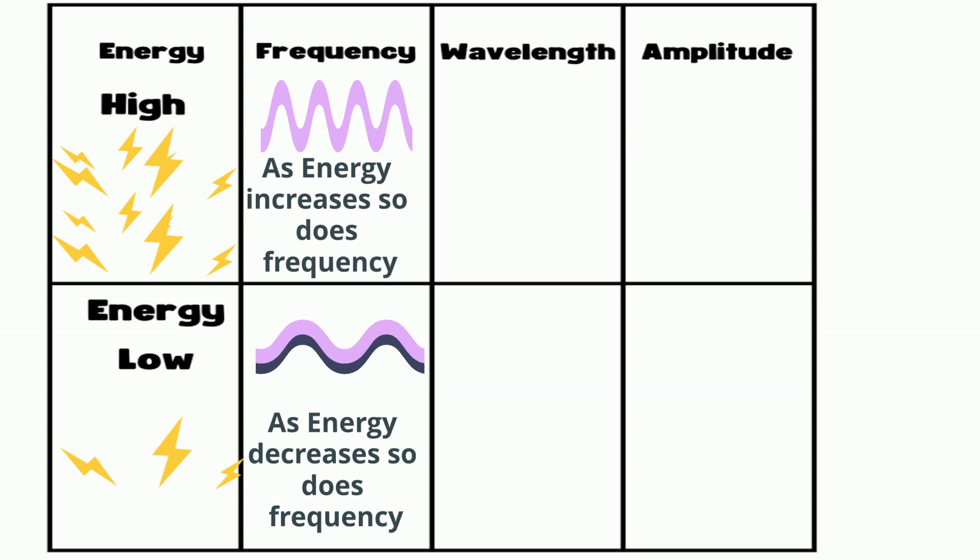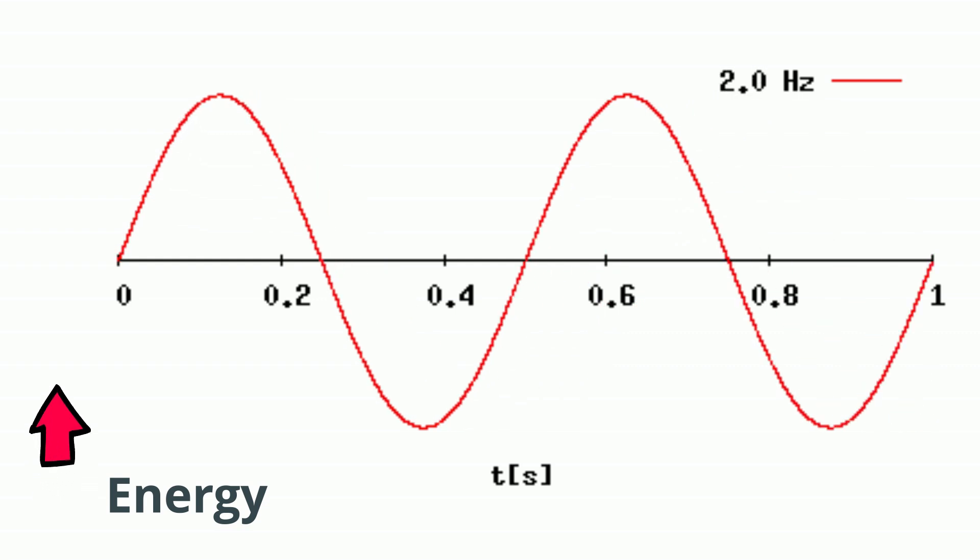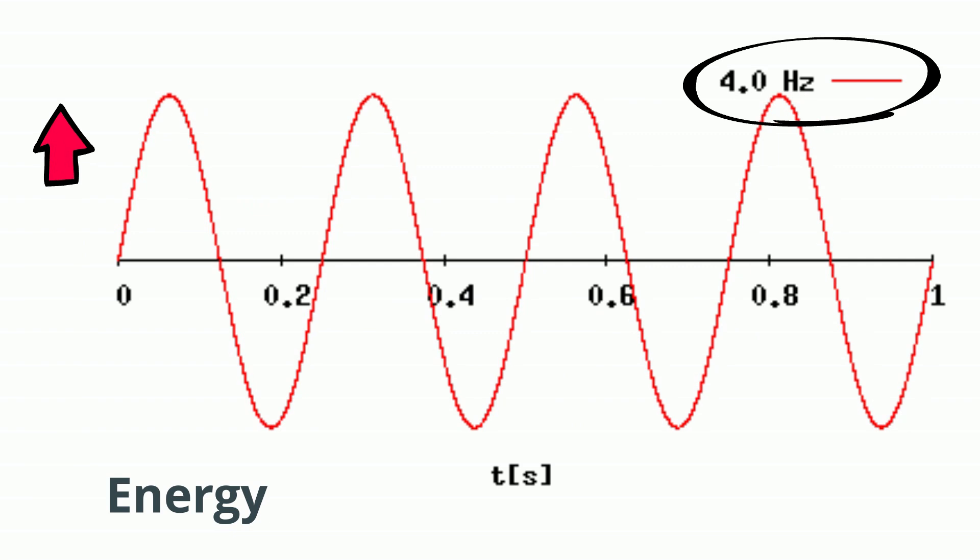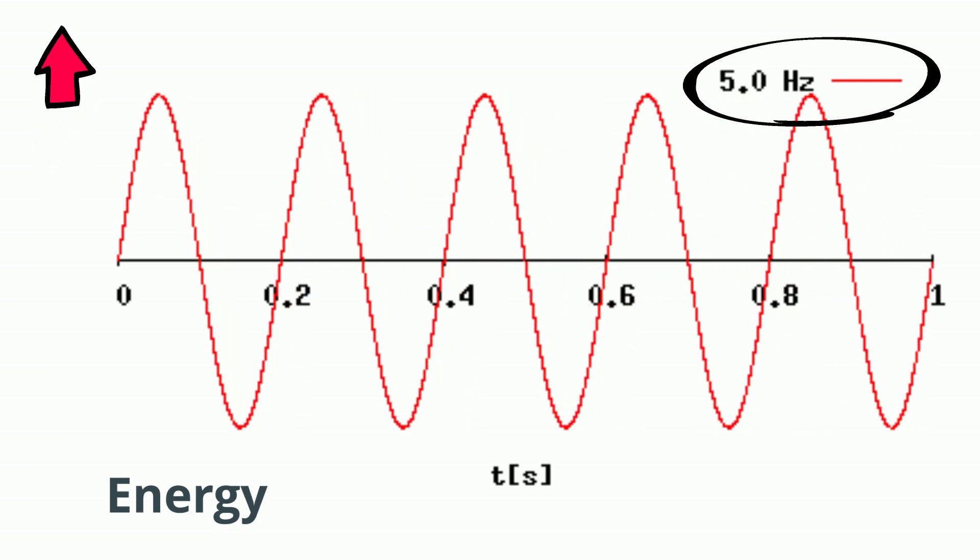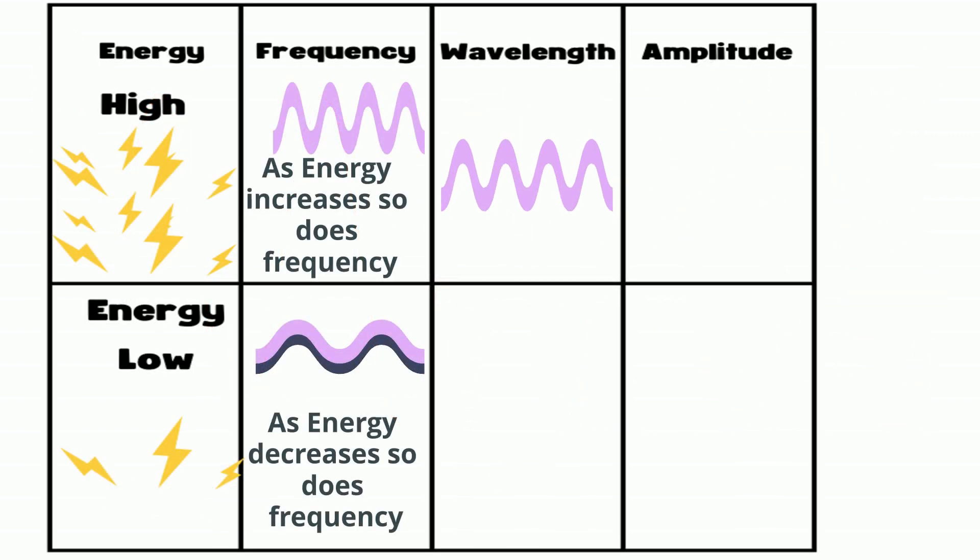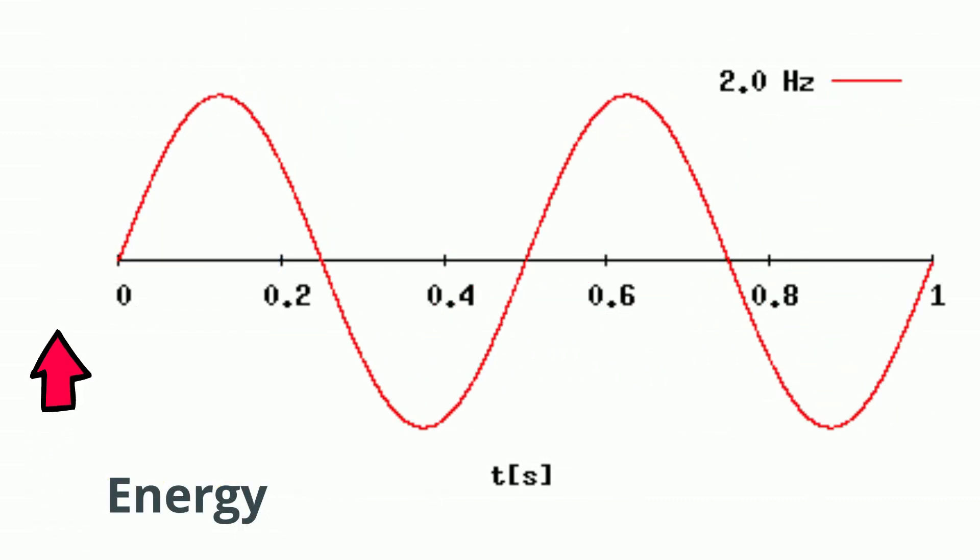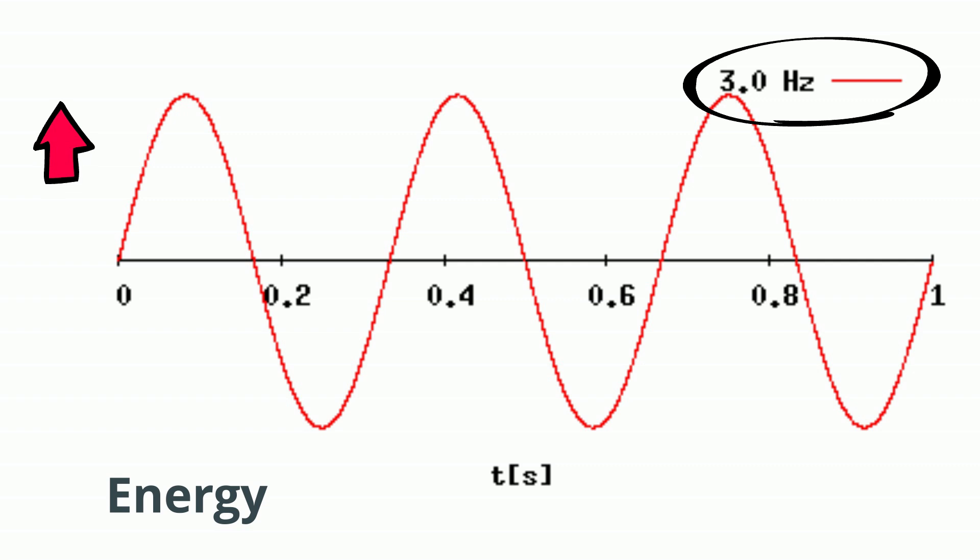Notice that as more energy is applied, the frequency increases and the wavelengths become shorter. So let's take a look at wavelength and energy. Wavelength is the distance from crest to crest or trough to trough. As energy increases, the wavelength gets shorter and the frequency increases.